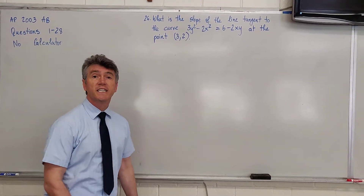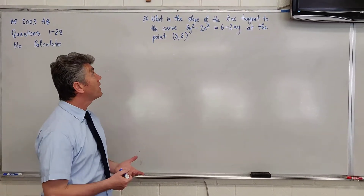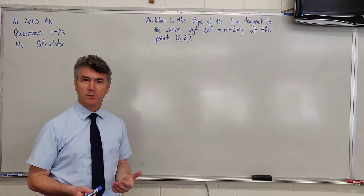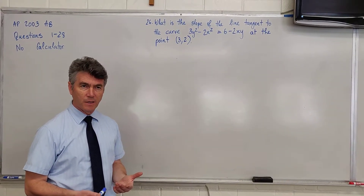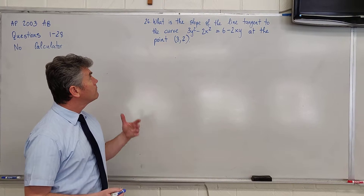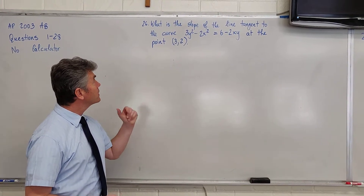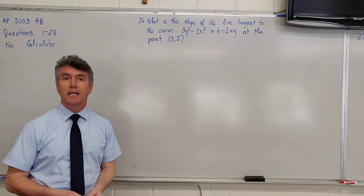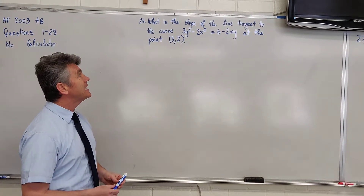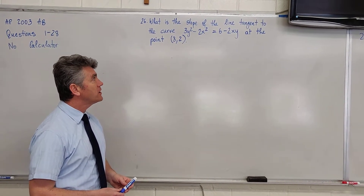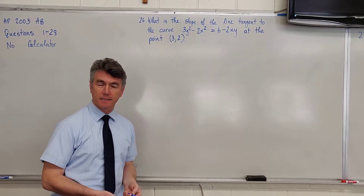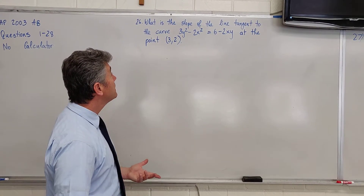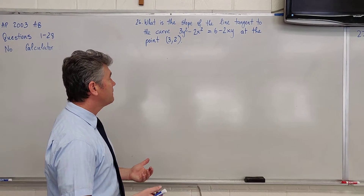In problem number 26, you are asked to find the slope of the line tangent to the curve at a certain point. For this problem, what you are required to remember is implicit differentiation. There is no way we can isolate x or y, and so we are going to have to use implicit differentiation.